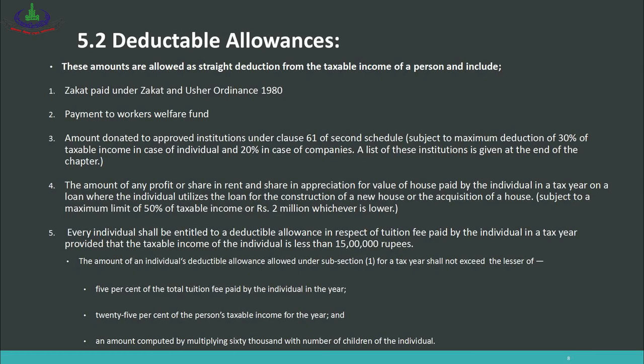Number 1: Zakat paid under the Zakat and Ushr Ordinance 1980. Number 2: Payment to Workers' Welfare Fund — any company making such a payment can deduct it from total income. Number 3: Amount donated to an approved institution under Clause 61 of the Second Schedule, subject to a maximum deduction of 30% of taxable income in the case of an individual and 20% in the case of a company. A list of these institutions is given at the end of the chapter. So if you donate to recognized institutions listed under Clause 61, that amount can be deducted from total income within the stated limits.